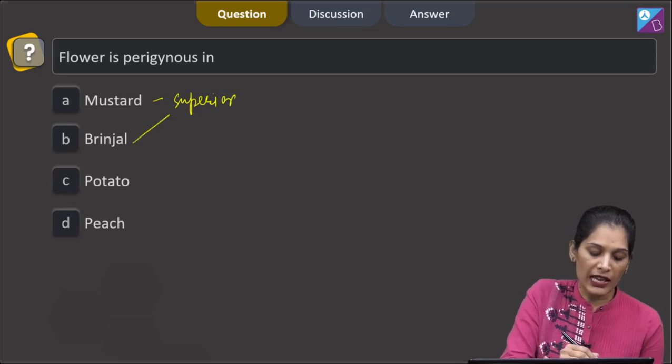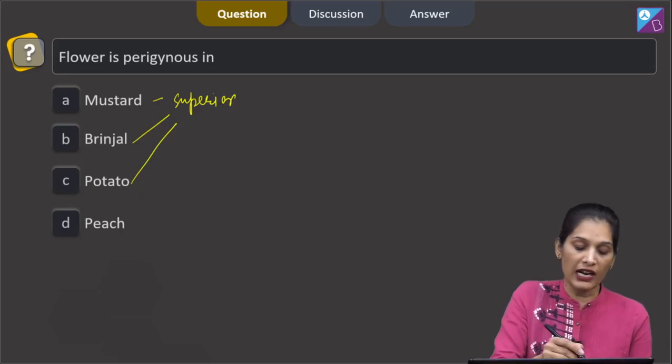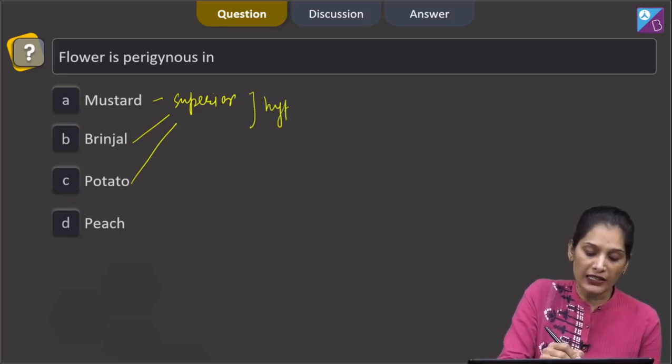So true for brinjal and potato. All of them have superior ovary. So the flower is hypogynous.